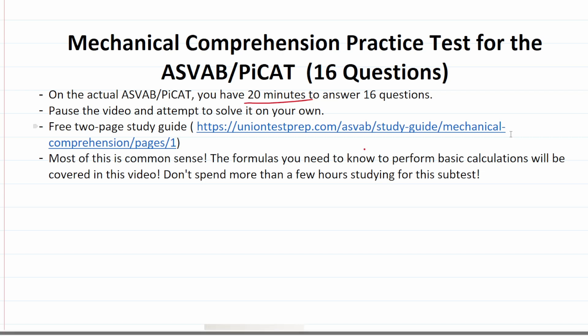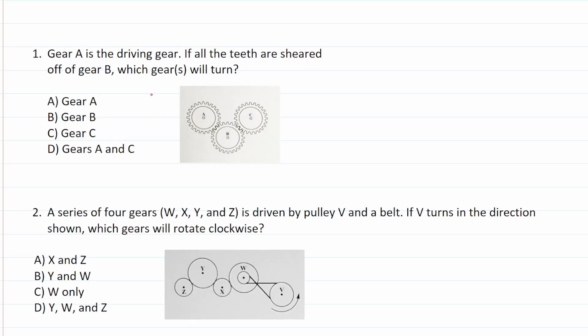This first question says gear A is the driving gear. If all the teeth are sheared off of gear B, which gears will turn? So since gear A is the driving gear, that means it's connected to a drive shaft, which is connected then to a motor. So as long as the motor turns and gear A is still connected to it via a drive shaft, gear A is always going to turn. That said, if the teeth on gear B shear off, we can see that gear A and gear B mesh together. So gear A turns gear B and in turn gear B turns gear C. So if there are no teeth on gear B, A can't turn B and B can't turn C. So these two are no longer going to turn. So the only one that will turn is gear A, given that it's connected to a motor via a drive shaft.